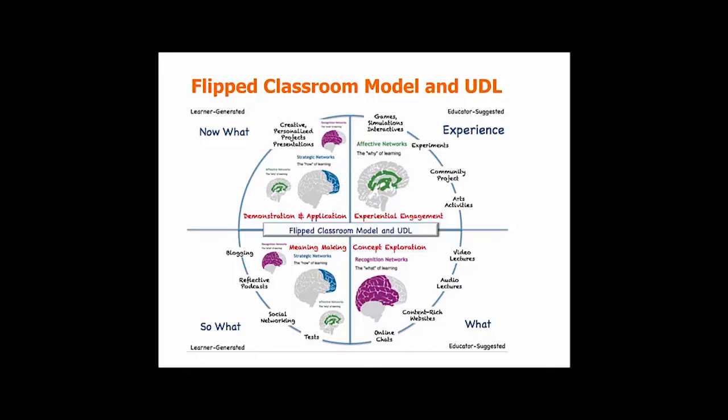Let's take a look at the flipped classroom model and UDL. As you can see, you have several different options for incorporating each network. For example, in the affective network — the why of learning — you can use game simulations, experiments, or art activities. For concept exploration, or the recognition network, you can utilize video lectures, online chats, and audio lectures. In the strategic network — the how of learning — you can have your students do blogging, reflective podcasts, traditional tests, and creative personalized projects and presentations.